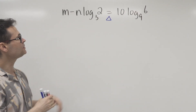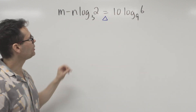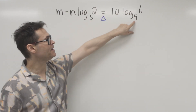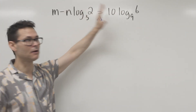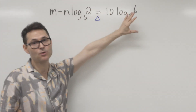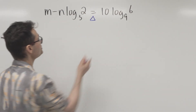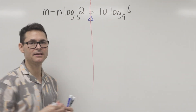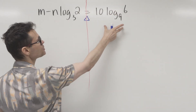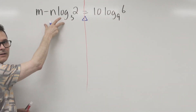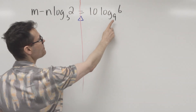A couple of challenges: students often don't know where to start, and also the bases are three and nine. If I'm going to create an equation, the left-hand side has to be equivalent to the right-hand side — the bases ought to be the same. So I'm going to take the strategy of almost like an identity: I'll take the more complicated side and mold it to look like the other.